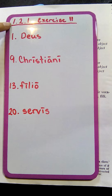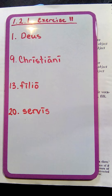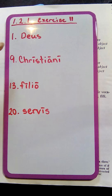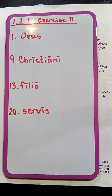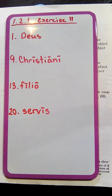We're going to go over Unit 1, Lesson 2, Section 1, Exercise 11. We're going to go over numbers 1, 9, 13, and 20. The instructions say: number one, tell us what forms these are, and number two, give the English meaning.